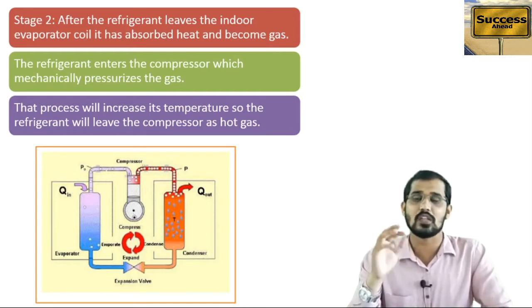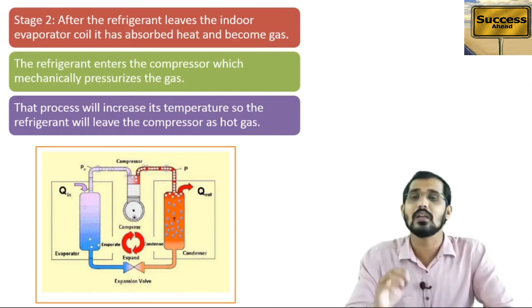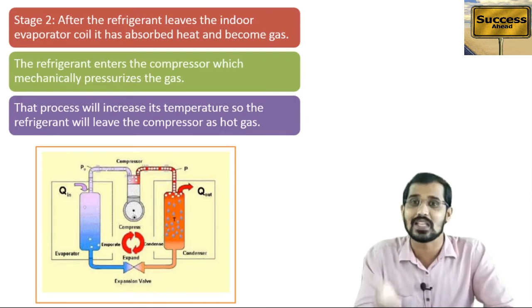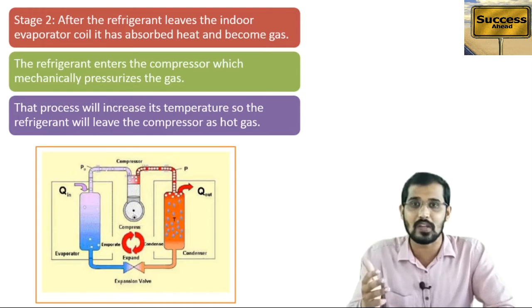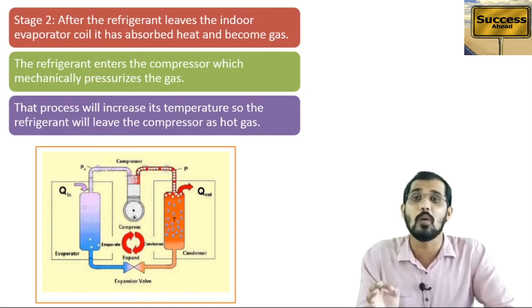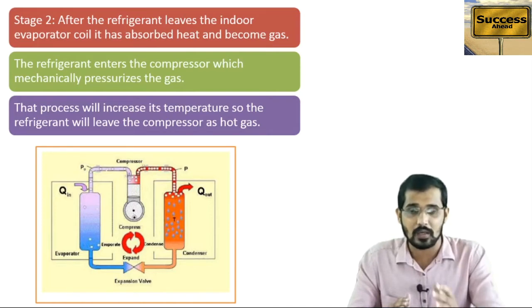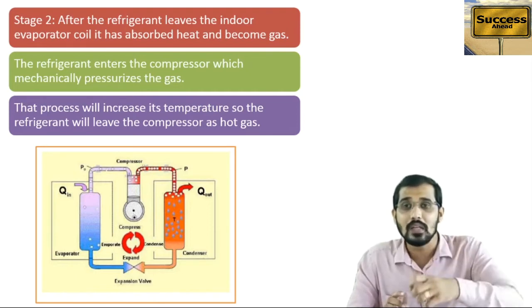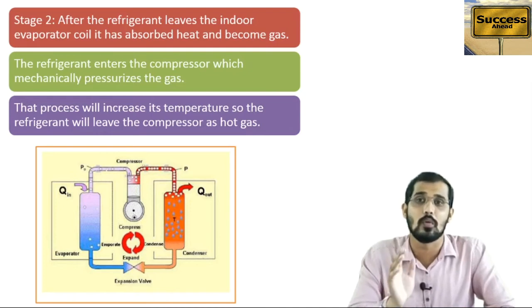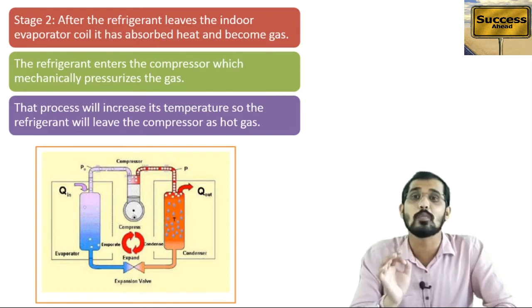Whenever this refrigerant enters the compressor, it compresses the gas, and the temperature of that gas increases. Whenever we increase the pressure, the temperature increases. So the refrigerant will leave the compressor in the form of a hot gas. The liquid refrigerant is heated in the evaporator and leaves as gas, then transfers to the compressor where it is compressed to higher pressure, increasing its temperature, and leaves as a hot gas.